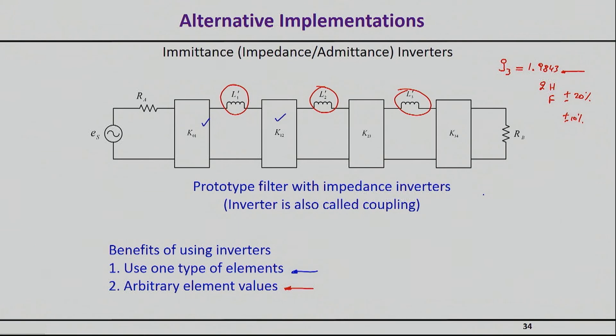The fantastic thing about this implementation is that the values of your actual components are totally arbitrary. So you choose what you want them to be, and you scale everything based on the value of the inverters, which is actually a much easier thing to do. So your actual elements in the filter can be any value you like. So somehow, maybe your factory is producing inductors of value 2 nano Henry, and that's all you can do? Great. You can actually build a filter based on that.